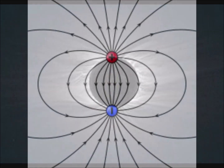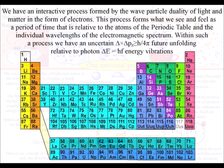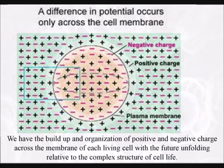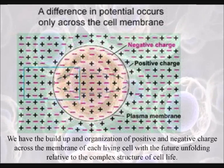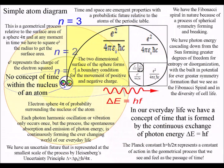At low temperatures we have a phase change in matter, and the process is relative to the atoms of the periodic table, forming the potential for cell life and the Fibonacci spiral, with nothing ever being totally perfect because it arises out of broken spherical symmetry.